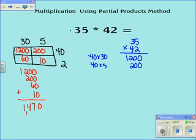Now I'm going to look at the 2. 2 times 30 is 60. And 2 times 5 is 10.